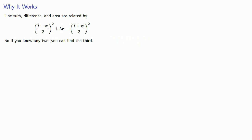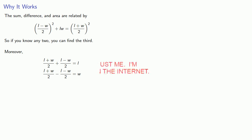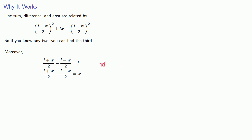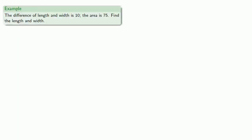Another useful feature is that if you add half the sum to half the difference, you get the length. And if you subtract half the difference from half the sum, you get the width. For example: the difference of length and width is 10, the area is 75 — find the length and width.